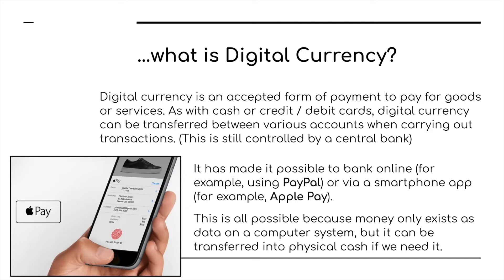Digital currency is an accepted form of payment, enabling you to pay for goods and services. As with cash or credit and debit cards, digital currency can be transferred between various bank accounts when carrying out transactions. So if you want to buy something using a credit card or something like Apple Pay, it is possible because this money only exists as data on a computer system — we are transferring this data, this money packet, from your bank account from one data center to another, i.e., the shop or company supplying the goods or service.